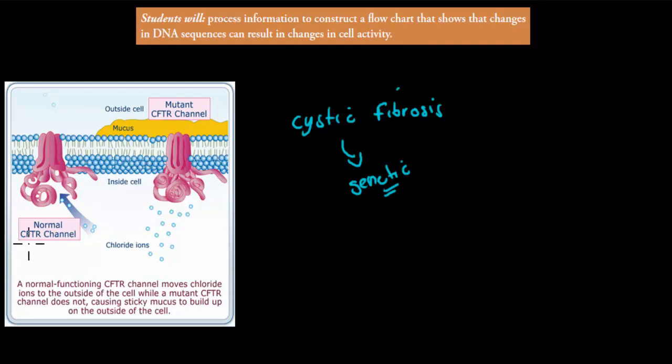This is the normal actual CFTR gene that makes this channel open. So what happens usually is these chlorine ions will pass through this protein channel. And that means that there's no buildup of mucus. So this mucus will be able to move into the cell and not buildup outside.